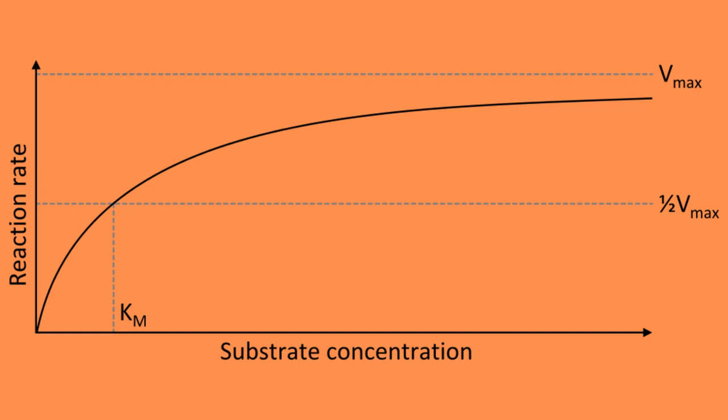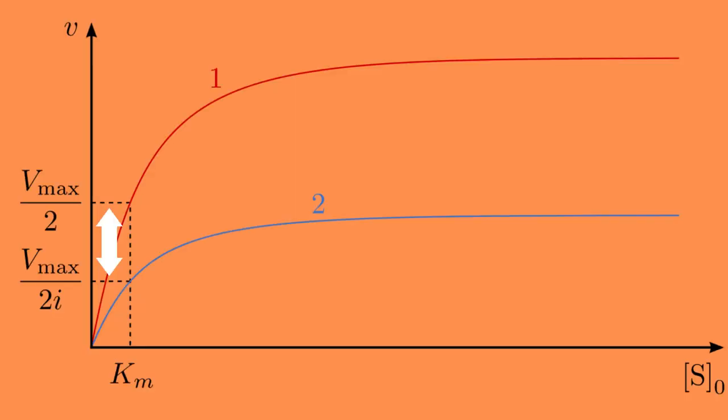However, if we add a non-competitive inhibitor, the Michaelis-Menten plot starts looking like this instead.